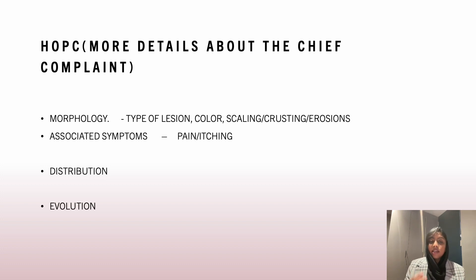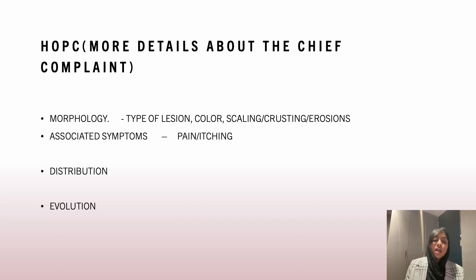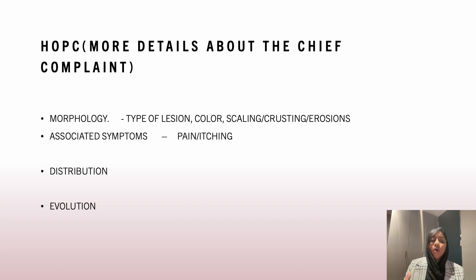Evolution is also very important. For cutaneous malignancies like squamous cell carcinoma, melanoma, and keratoacanthoma, there is a rapid progression, whereas BCC has a very slow progression. In bullous diseases, the lesion can start as a small papule, progress to a vesicle, and further enlarge to become a bulla. It's always good to ask about evolution so that you get a clinical picture of how the patient's lesion has developed over time.